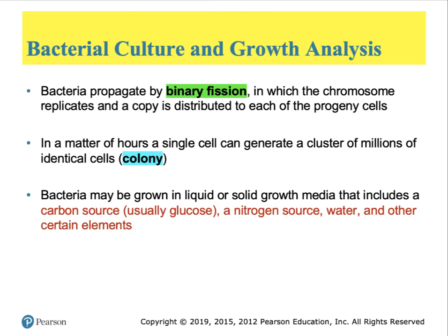Bacteria don't use the mitosis or meiosis methods of reproduction. They go through something called binary fission, where the process is very simple: you copy your DNA, stretch the cell, send one copy one way and the other copy the other way, then divide the cell in the middle. That leads to the production of offspring that can double every generation to produce a colony in a single day visible to the human eye. All cells in that colony are mostly of the same genetic composition, but may contain a number of mutants.